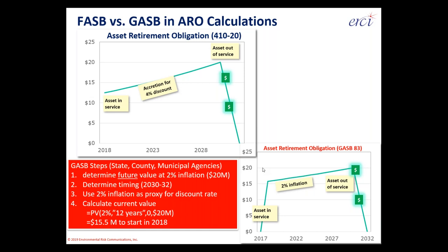For public agencies, it's just a four-step process, but it still starts with understanding what the future value will be and when it will occur — baseline cost of $20 million and expected performance in 2031, give or take a year. Instead of the credit-adjusted risk-free rate of return of roughly 4%, public agencies use just a proxy for inflation, which today might be 2 to 3%. So you come up with a different starting value. You book an offsetting asset as a deferred outflow of resources, book the liability at the start date when the asset comes into service, and then go forward with the unwinding of the discount rate — the accretion process. Just very minor differences between ASC 410-20 and GASB 83 in calculation method.